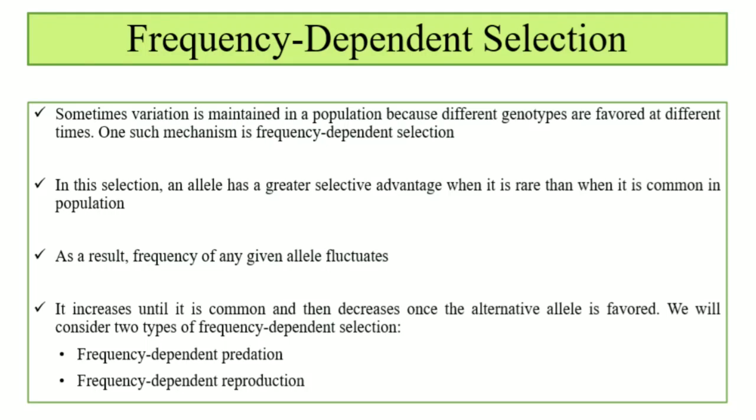In this selection, what happens is that when an allele is rare in a population — its frequency is less — it has a greater selective advantage than when it is common in the population. So with the passage of time, its allele frequency fluctuates. When it is favored, it increases; its frequency will increase until it is common. When it is common, then its frequency will decrease.